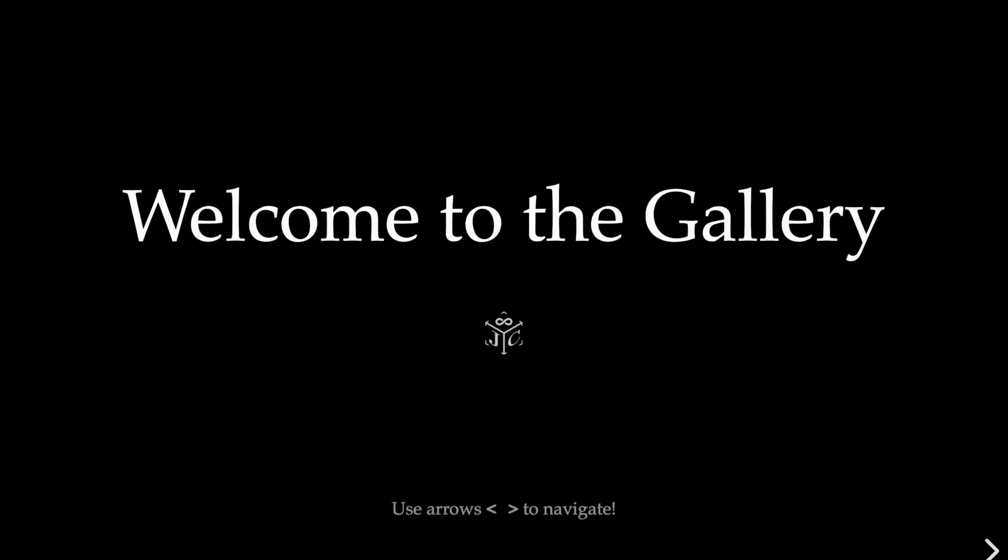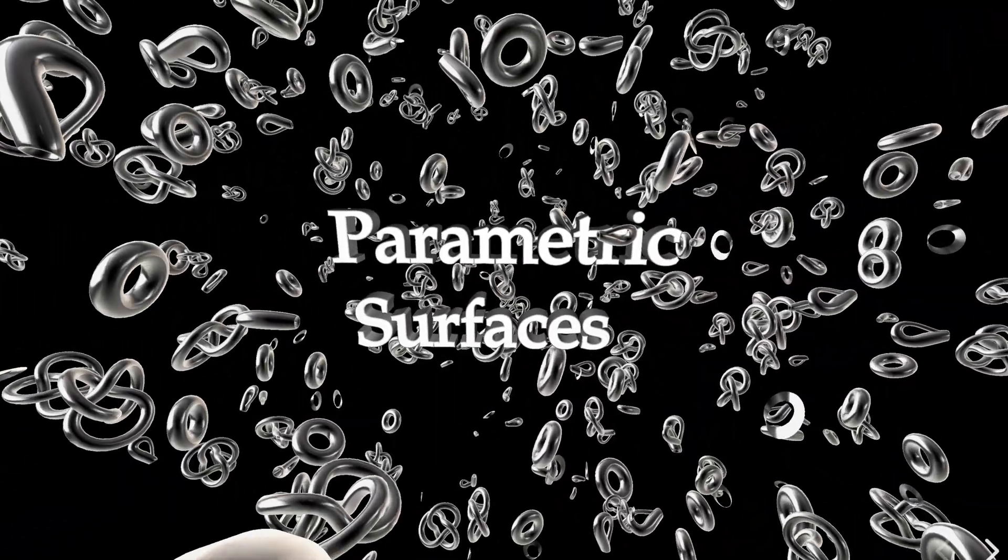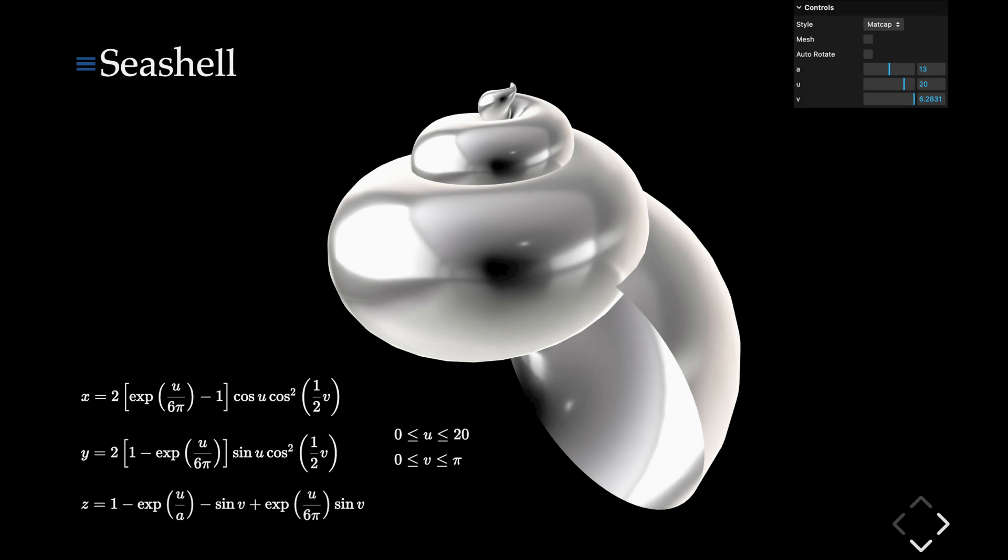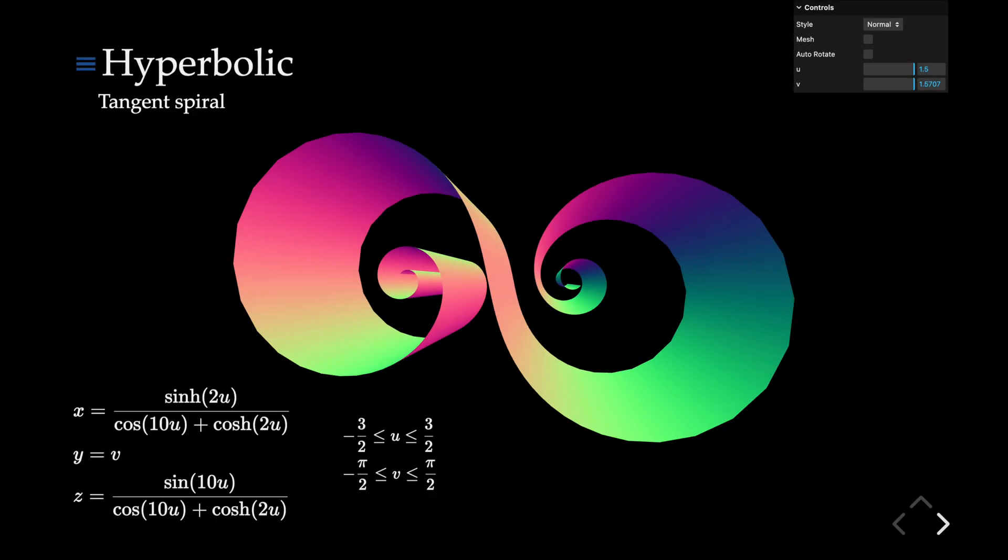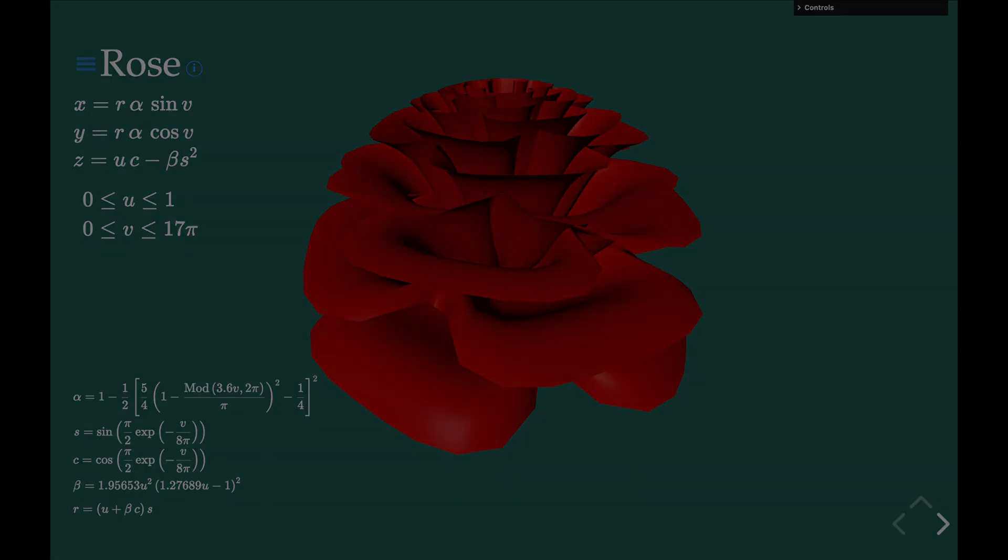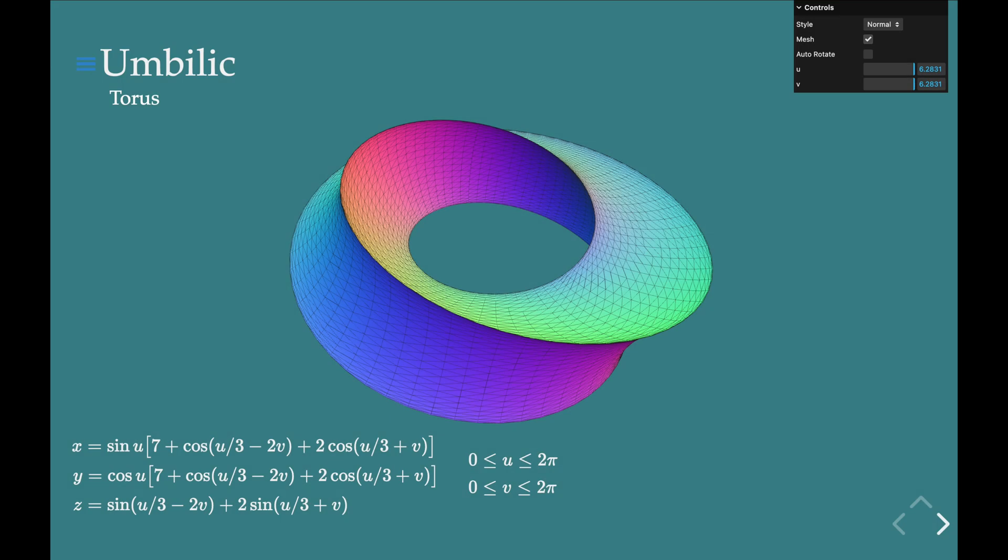If you like, you can explore this gallery of predefined parametric surfaces. Each surface comes with its corresponding parametric equations and the u v region where it's defined. You can also adjust the parameters to see how they affect the surface or experiment with colors to create stunning parametric surfaces.